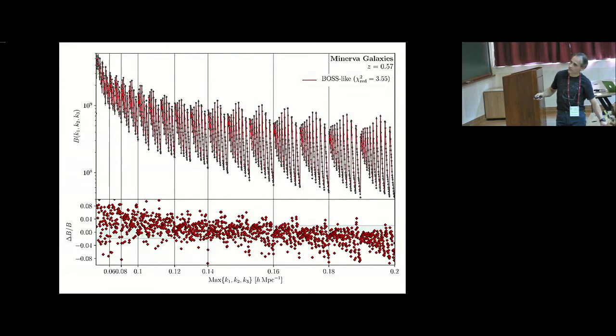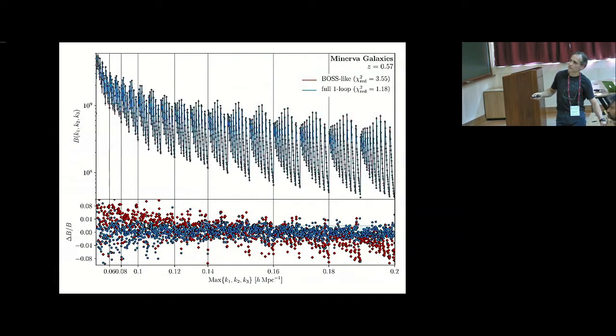And the line is the model. And here's the deviation of the model. So you can see that there are roughly, depending on triangle shape, deviations of order eight to ten percent. Once you include the loops, you see now the model works a lot better, and it's roughly within a couple of percent.